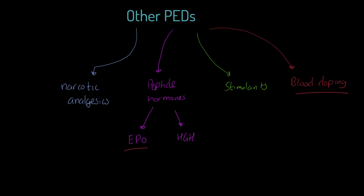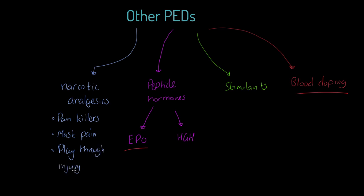Narcotic analgesics — what are we talking about here? We're talking about painkillers, opioid derivatives. Think about morphine as an example, and derivatives of that. These are pain-killing drugs. First of all, they mask pain, which is useful for a performer doing something particularly painful or if they're involved in an injury. A performer could play through an injury — imagine a netball player with a sprained ankle and a big final coming up; they may use a narcotic analgesic to get through that.